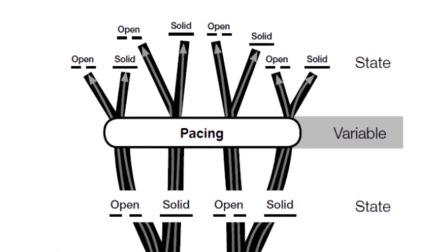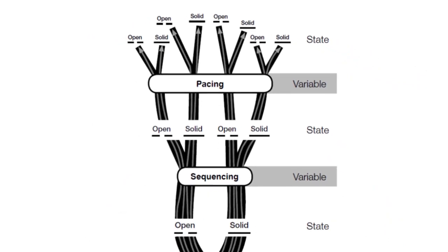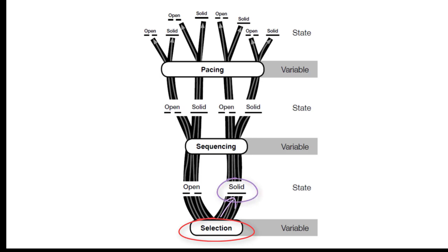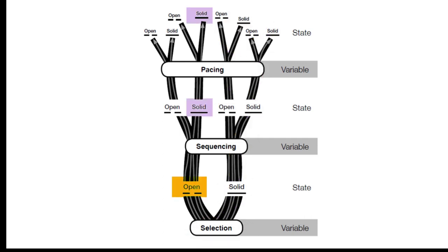The first key thing I want to say about these three variables is that a teacher who chooses an open selection state can then choose a solid sequencing state and a solid pacing state. A teacher that chooses a solid selection state could then choose an open or solid sequencing state or an open or solid pacing state. Just because you've chosen one state at the beginning doesn't mean that is the state for every single other variable. And it's that core thing that gives the beauty of this model.